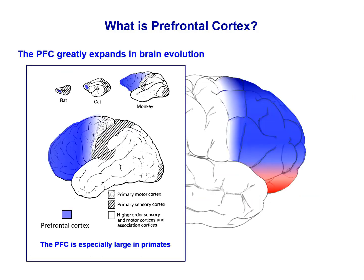Most importantly, the prefrontal cortex greatly expands in brain evolution. It is very small in rodents, which can be a challenge for rodent models of mental illness, but it becomes very large in old world monkeys and is especially large in humans, where it makes up an enormous amount of who we are.